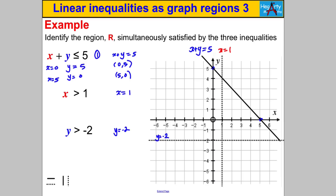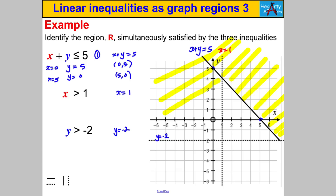Now let's identify region R satisfied simultaneously by all three inequalities. It's really helpful to shade what you don't want — shading what you want creates a cluttered picture, whereas what's left unshaded is always your region R. For x + y ≤ 5, we want below the line, so shade above it to mark what we don't want.